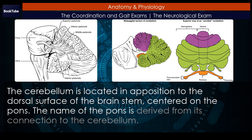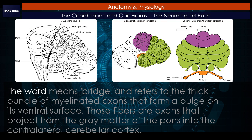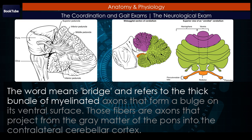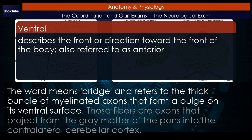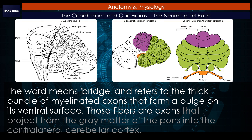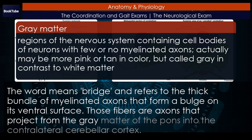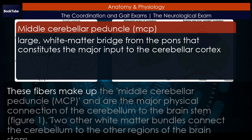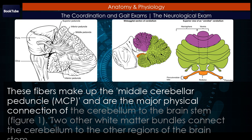The name of the pons is derived from its connection to the cerebellum. The word means bridge, and refers to the thick bundle of myelinated axons that form a bulge on its ventral surface. Those fibers are axons that project from the gray matter of the pons into the contralateral cerebellar cortex. These fibers make up the middle cerebellar peduncle (MCP) and are the major physical connection of the cerebellum to the brainstem.